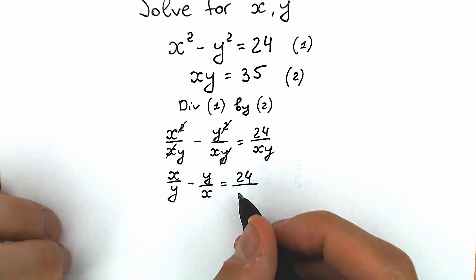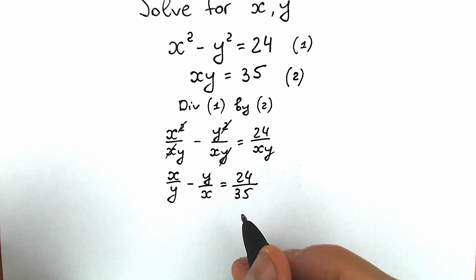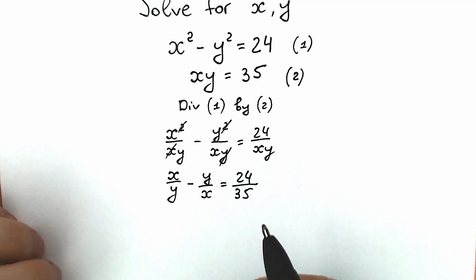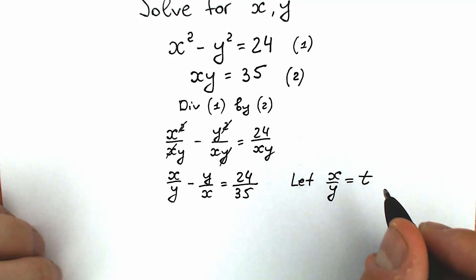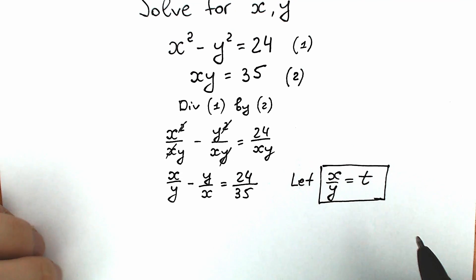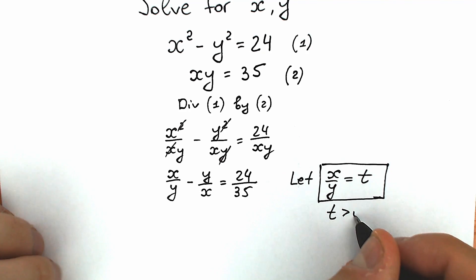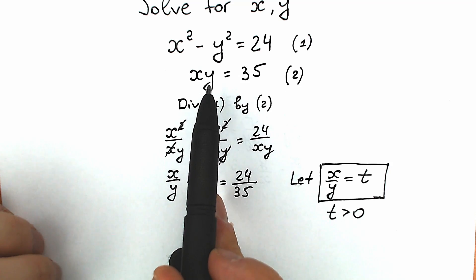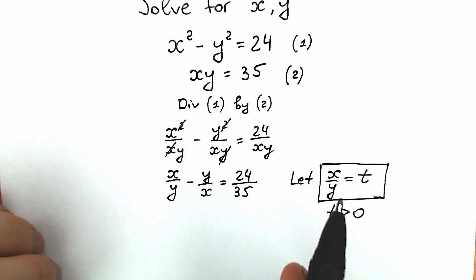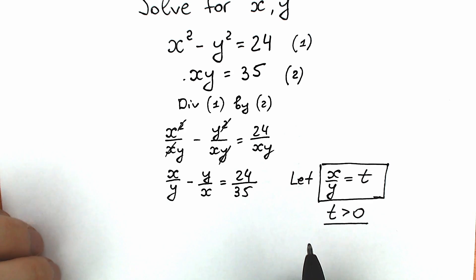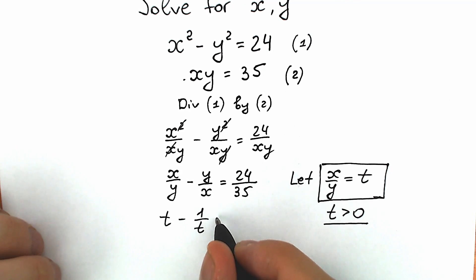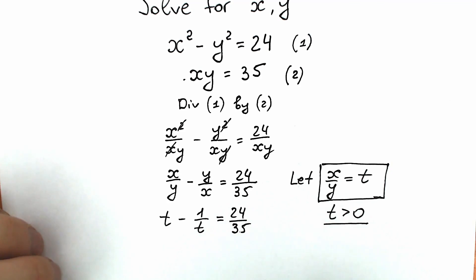So instead of xy we can write 35, giving us x over y minus y over x equal to 24 over 35. Now let's introduce a substitution: let t equal x over y. Note that t must be positive, because x and y must share the same sign, and t is negative would be rejected — so t is positive. Then y over x becomes 1 over t.